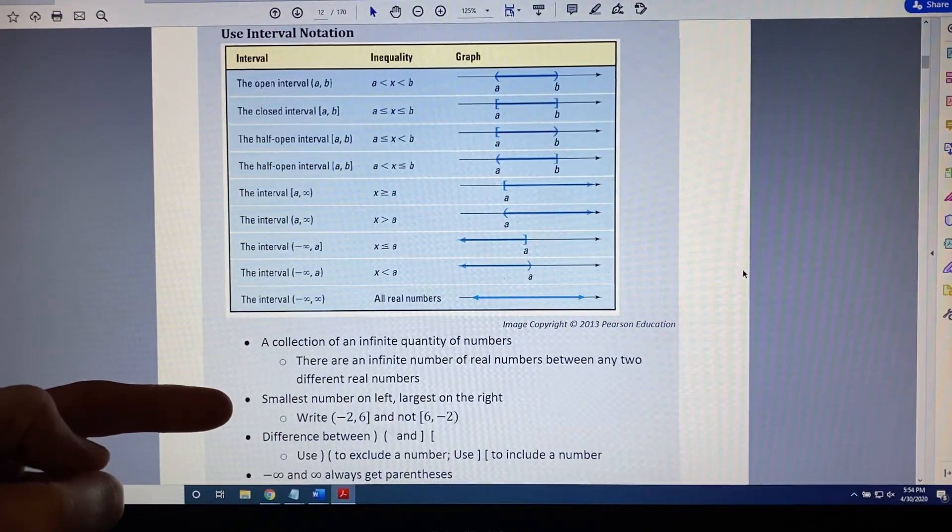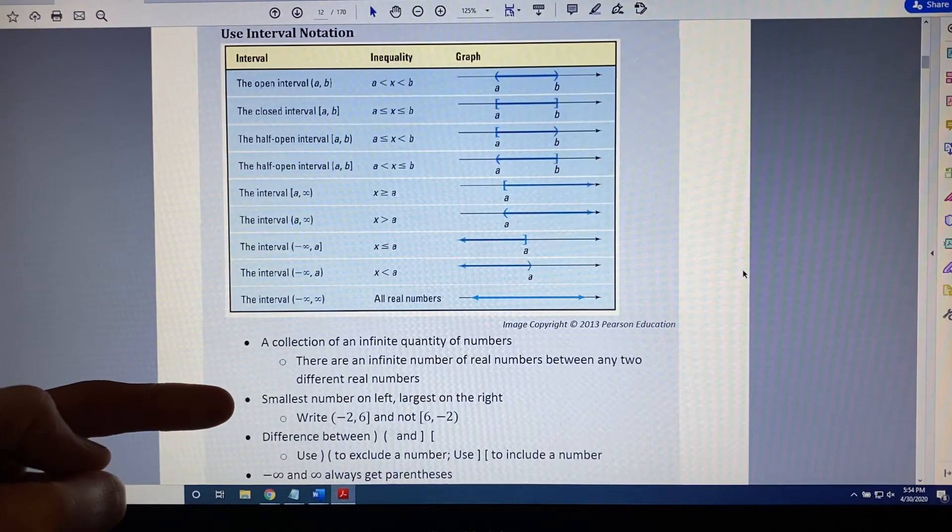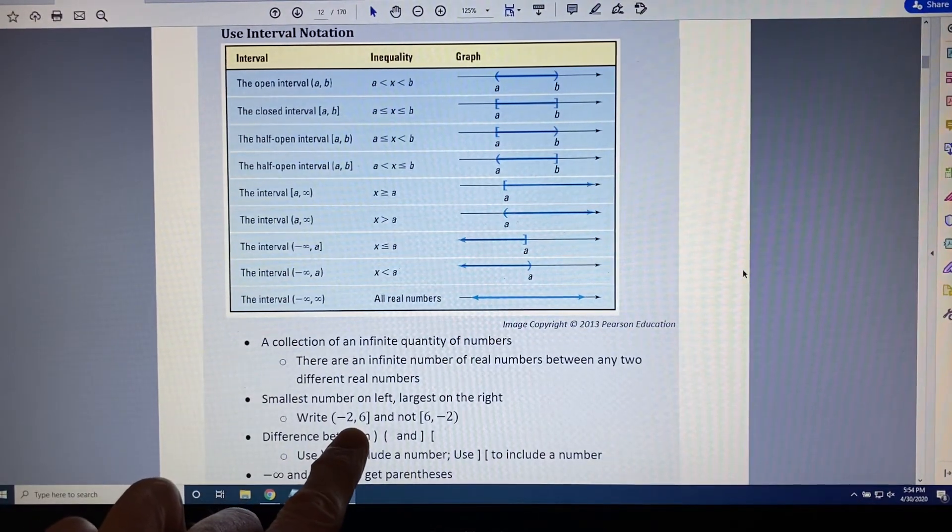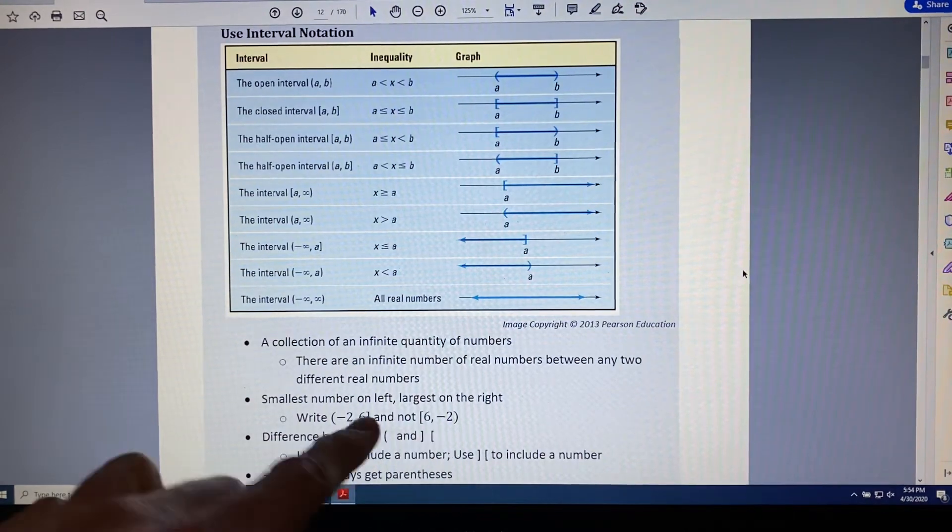When writing an interval, we must write the smallest number on the left and the largest number on the right separated by a comma. For example, you would write negative 2 comma 6 and not 6 comma negative 2.